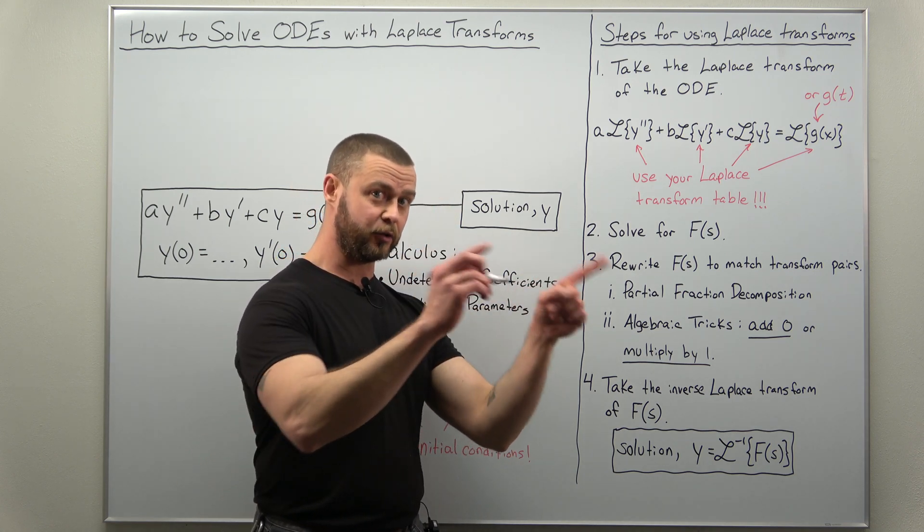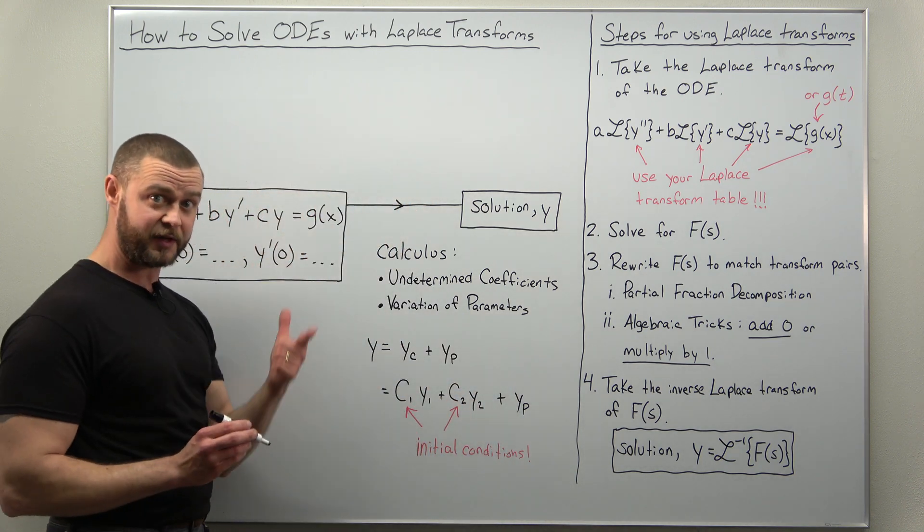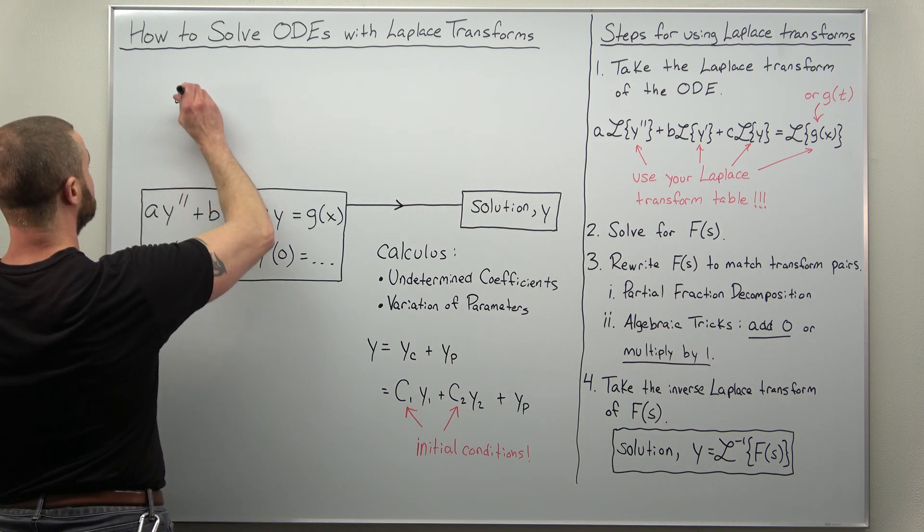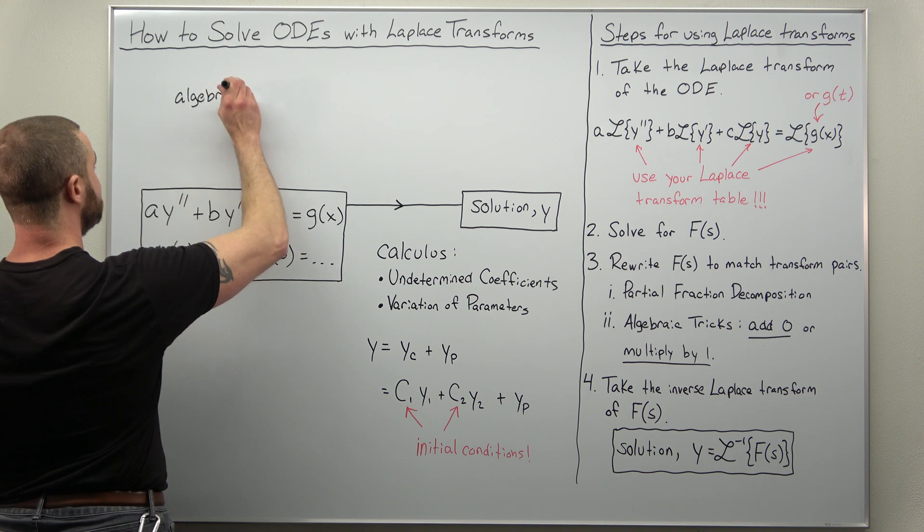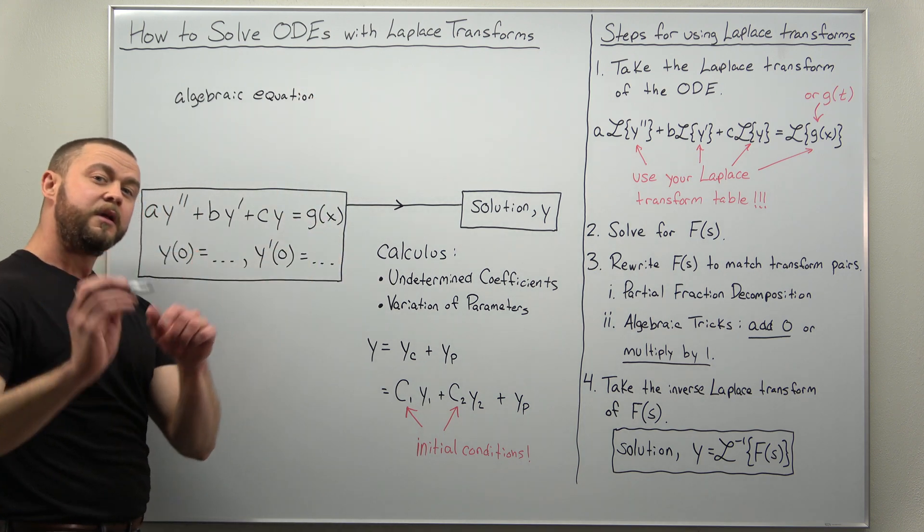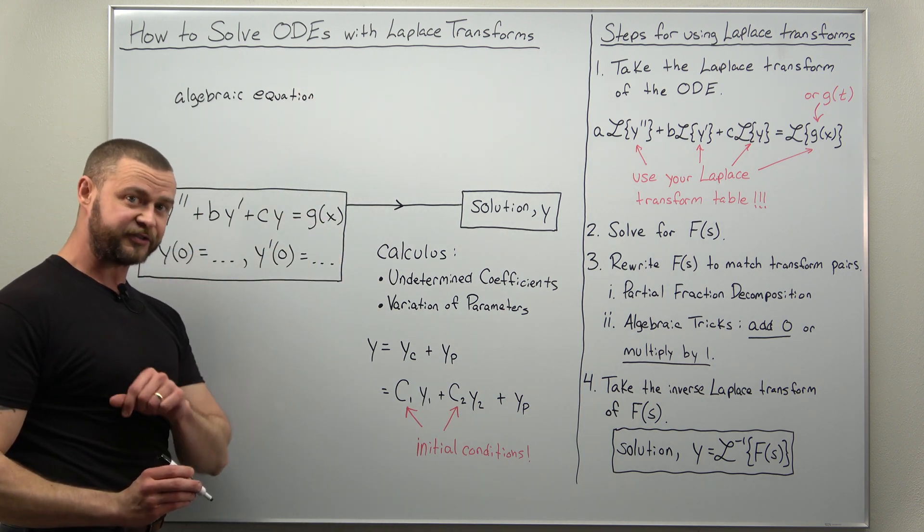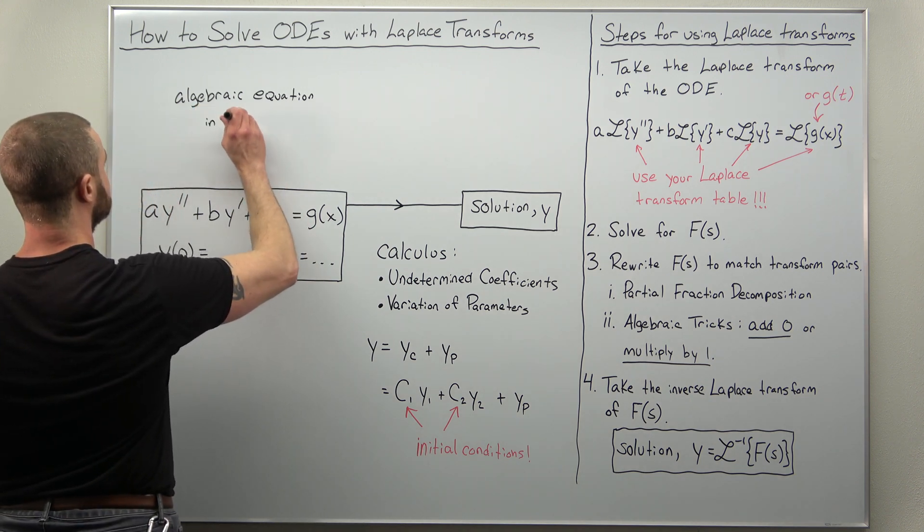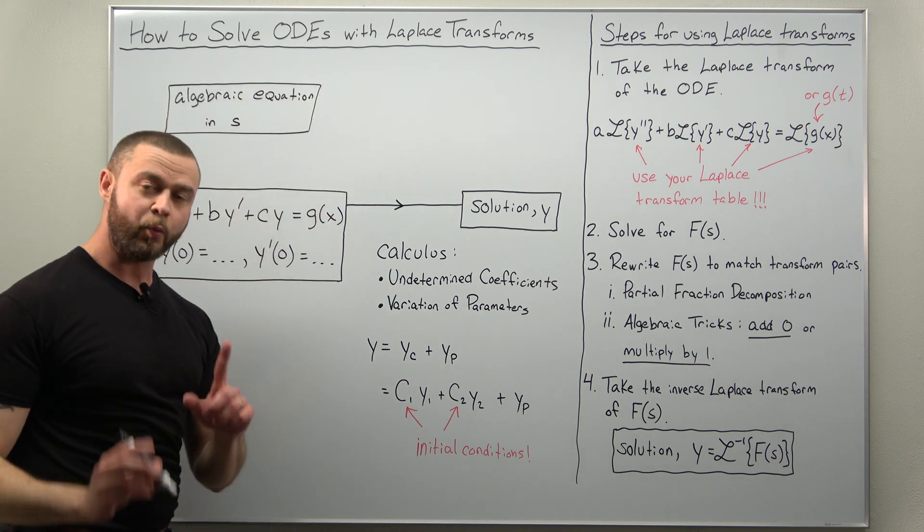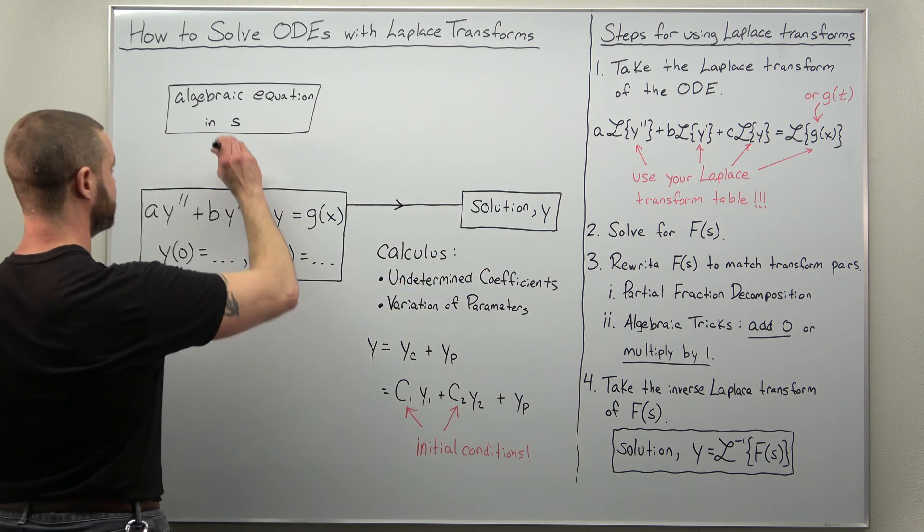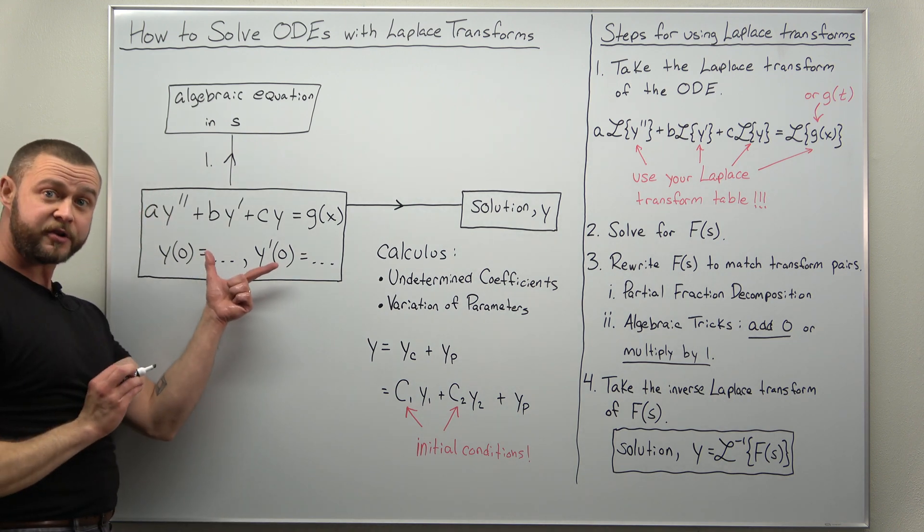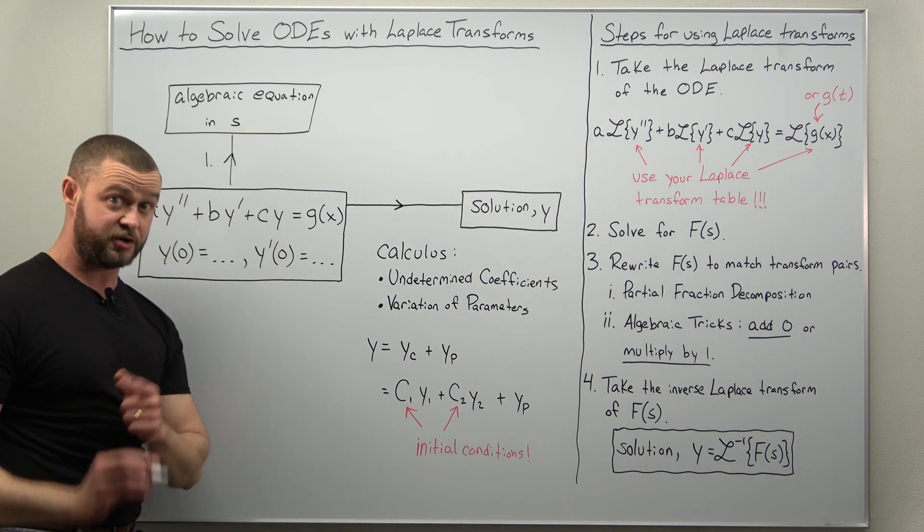All right, now what step one looks like in our indirect solution method in this diagram is we transform the differential equation into an algebraic equation in terms of our variable for Laplace transforms, which is s. So what step one in your steps listed over there looks like is this: we go from this differential equation to an algebraic equation in s.